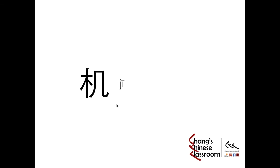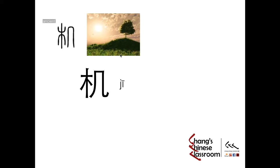Next character: Ji, meaning machine. This is the ancient character — the meaning has a very weak link to the modern meaning. In ancient times, the left part is a tree — that's wood. And the right part indicates a mountain with only one top. So in ancient times, this character represented a kind of tree on a one-topped mountain. Later on, probably because in ancient times all machines were made of wood, they evolved the meaning: machine.